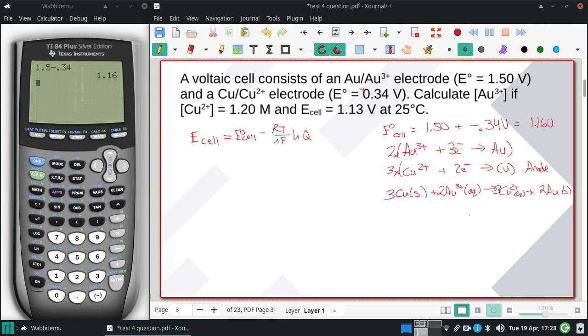All right. So I have my balanced equation, so I can get my Q. My Q will be the copper ions cubed over the gold ions squared. I have my E° and my n will be, I've got the 2 electrons and 3 electrons, so 6. So I can start putting things together.